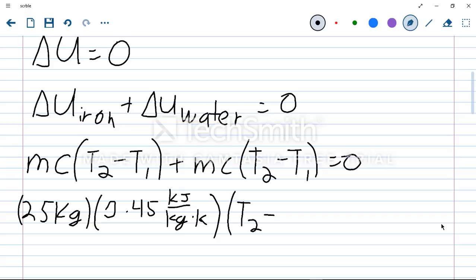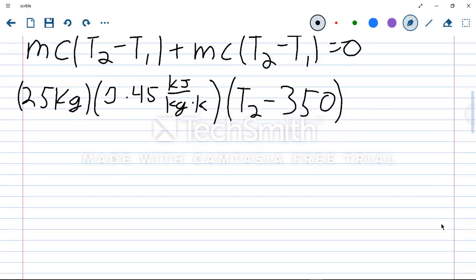You need to be aware that since the change in kelvin is equal to the change in Celsius, you can use either or. So for this example, I'm going to stick with the given value of 350 degrees Celsius. That's the change in energy for the iron block. Plus, same thing for the tank of water. So the mass of the water was 100 kg.